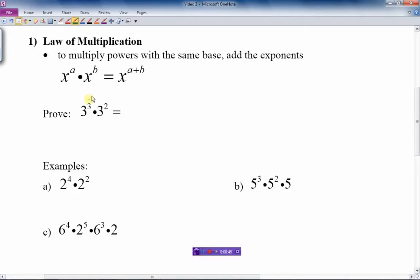So just to show this, to prove this, I'm going to use an example of 3 cubed times 3 squared. So let's just write out what that means. What does 3 cubed mean? It means 3 times 3 times 3. 3, 3, 3 is multiplied together. And that's multiplied by two more 3's.